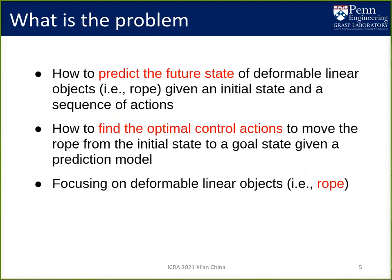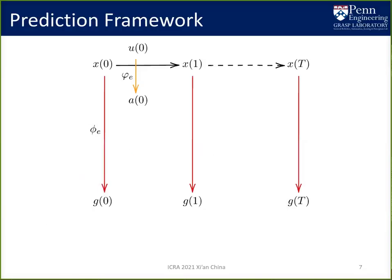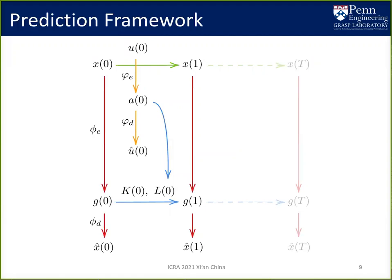In this paper, we investigate the problem of how to predict the future states of a rope and how to find optimal control actions. For the prediction problem, we attempt to solve this by encoding the high dimensional state x into latent state g in the red line, and encode action u to a latent action a in the orange line. Then we apply locally linear dynamics in the latent space using state matrix k and control matrix l in the blue line. Finally, we decode the latent state g to a predicted state x hat. This is the flow diagram for the prediction framework. Equations can be found in the paper.